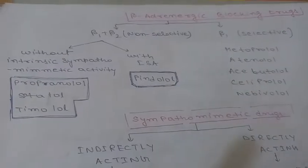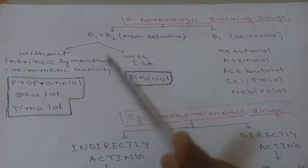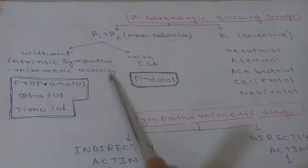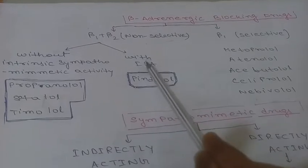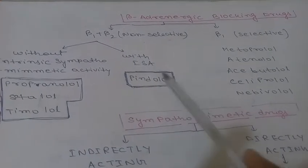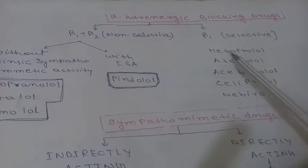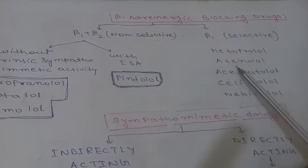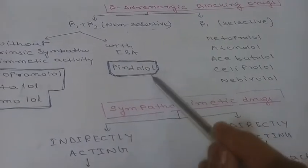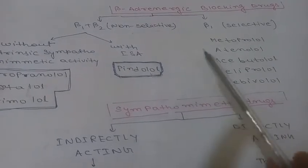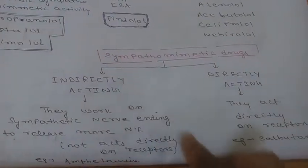Now beta-adrenergic blocking drugs. Non-selective blockers (blocking both beta-1 and beta-2) without intrinsic sympathomimetic activity include propranolol, sotalol, and timolol; with intrinsic sympathomimetic activity is pindolol. Beta-1 selective blockers include metoprolol, atenolol, acebutolol, celiprolol, and nebivolol.